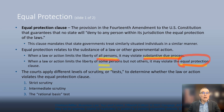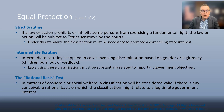Courts have applied different levels of scrutiny for Equal Protection claims: strict scrutiny, intermediate scrutiny, and the rational basis test. Strict scrutiny is the hardest burden for the government to meet; the rational basis test is the easiest; and intermediate scrutiny is in the middle. When spotting issues in a set of facts, look for the exercise of a fundamental right.